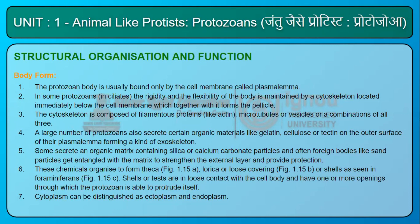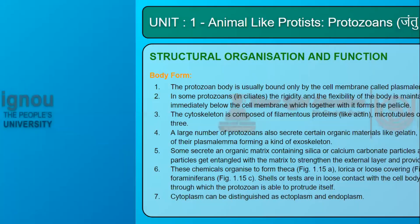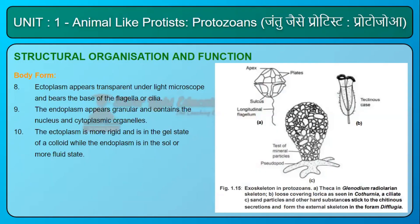These chemicals organize to form a theca, lorica or loose covering, or shells as seen in foraminiferans. Shells or tests are in loose contact with the cell body and have one or more openings through which the protozoan can protrude itself. Cytoplasm can be distinguished as ectoplasm and endoplasm. Ectoplasm appears transparent under the light microscope and bears the base of the flagella or cilia. The endoplasm appears granular and contains the nucleus and cytoplasmic organelles. The ectoplasm is more rigid and is in the gel state of a colloid, while the endoplasm is in the sol or more fluid state.